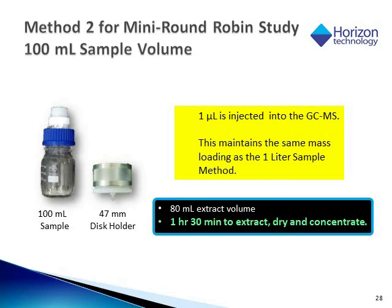In addition to method one, a second method was performed in parallel. A 100-milliliter sample was extracted with the 47-millimeter disc using a standard disc holder. To keep mass loading on the GC equivalent to a 1-liter sample, the injection mode on the GC was splitless. The benefit of the lower sample volume was a smaller extraction volume of 80 milliliters of solvent, and the processing time to extract, dry, and concentrate was 1.5 hours.